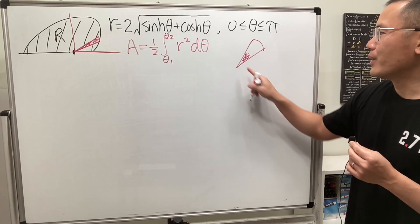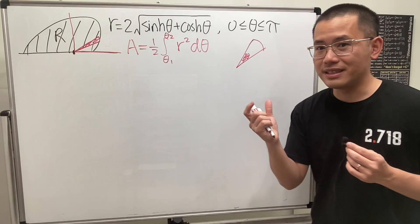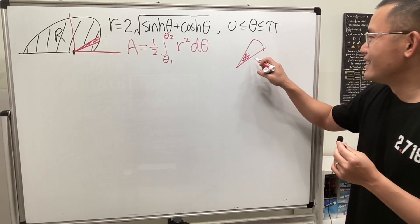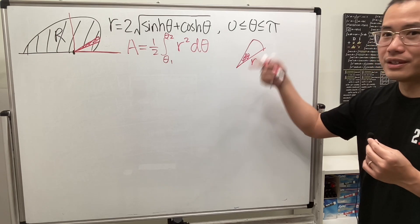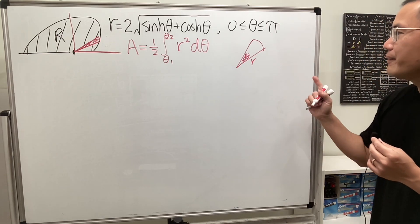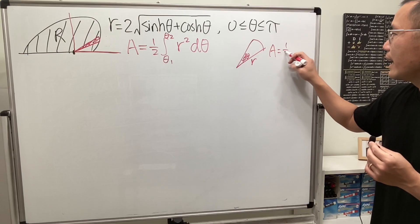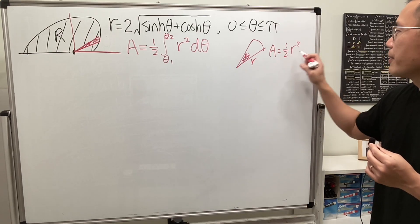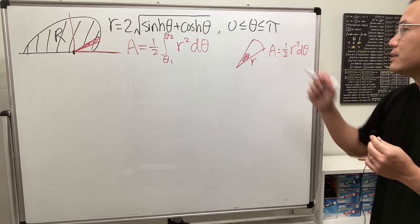And then what's the r? Well, from here to here, that's the distance, that is the r, which is just like the radius of the circle, kind of. And then the area for that is precisely 1 half r squared times the angle theta, which is d theta.